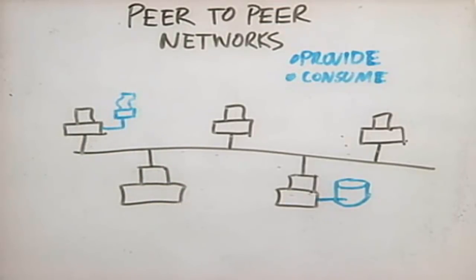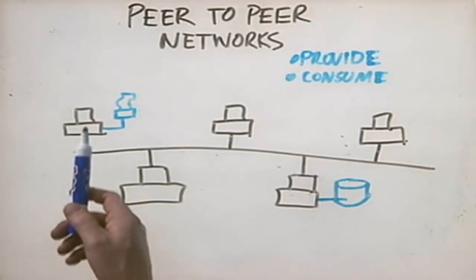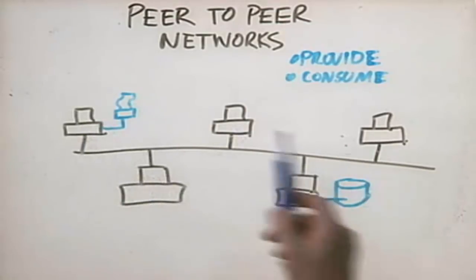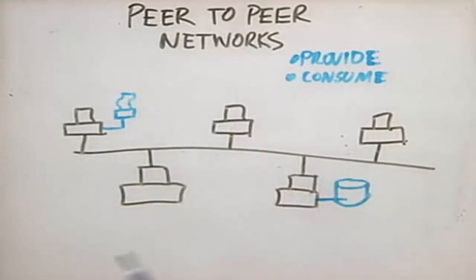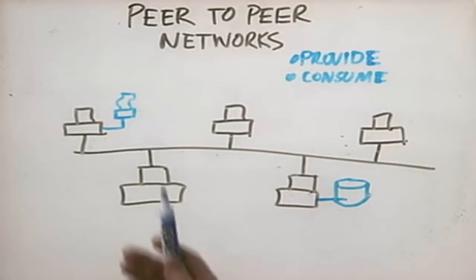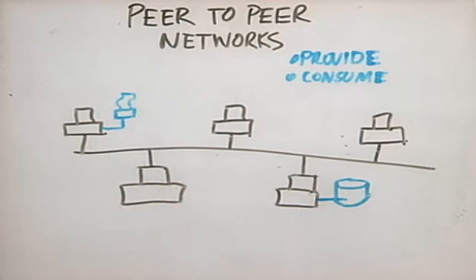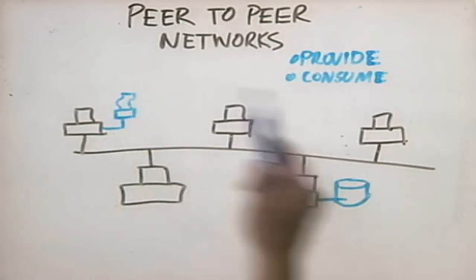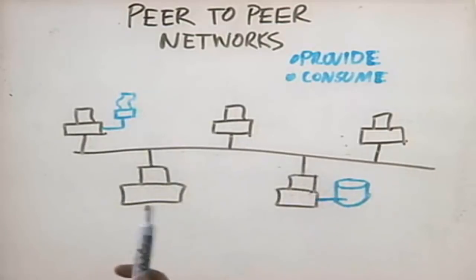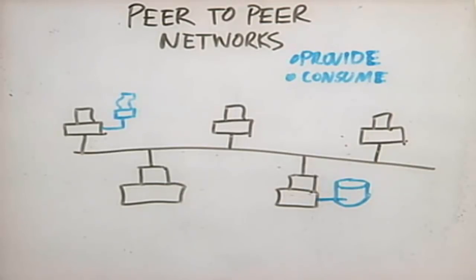Now, there are a lot of benefits to a peer-to-peer network. First of all, it's very easy to implement. You could take a whole bunch of Windows XP workstations, for example, and create a peer-to-peer network — share printers, share storage. You don't have to do much to configure this; all you have to do is share your resources. It's also very inexpensive. With a Windows XP peer-to-peer network, you just install the operating system. There's no special software to purchase and implement.